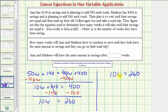Well, 10W means 10 times W, so to undo this multiplication and solve for W, we'll divide both sides by 10. 10 divided by 10 simplifies to one, so we have one times W, which is W, equals 260 divided by 10 is equal to 26.